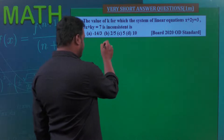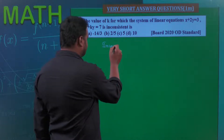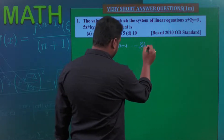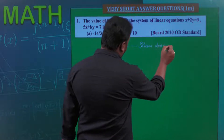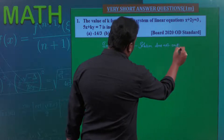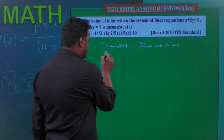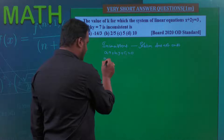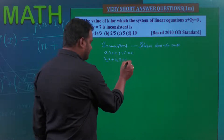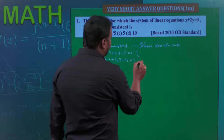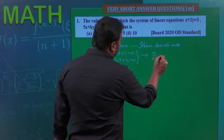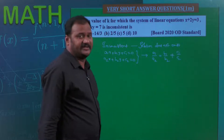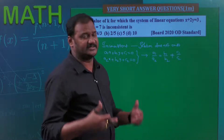What do you mean by a system of equations being inconsistent? Inconsistent means solution does not exist. Solution does not exist means: if your equations are a1x + b1y + c1 = 0 and a2x + b2y + c2 = 0, they are said to be inconsistent only when a1/a2 equals b1/b2 but not equal to c1/c2 — they represent a pair of parallel lines.